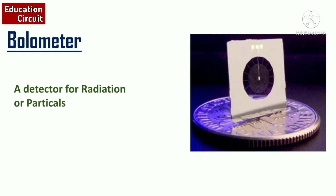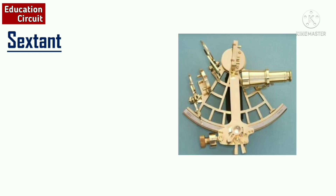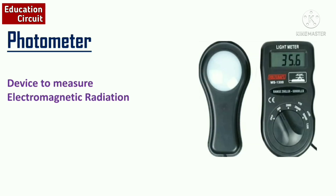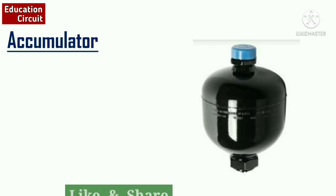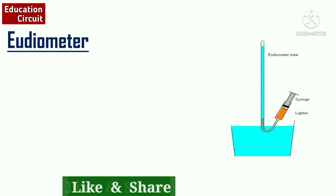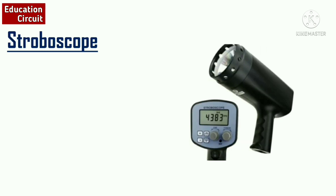The bolometer is used to detect radiation and particles in sunlight. Next, the barometer is used to measure atmospheric pressure. The sextant is an instrument used to measure the angle of the sun, moon, and stars from the horizon, and it is used majorly on ships. The photometer is a device used to measure electromagnetic radiation. And the accumulator is a device that accepts energy, stores energy, and then releases energy — it is basically used to store energy.